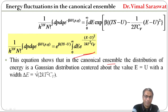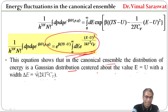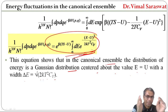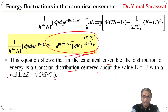In the canonical ensemble, the distribution of energy is a Gaussian distribution centered about the value E equal to U, with a width delta E equal to root of 2kT²Cv. This equation shows that in the canonical ensemble the distribution of energy is a Gaussian distribution, centered at E equal to U.